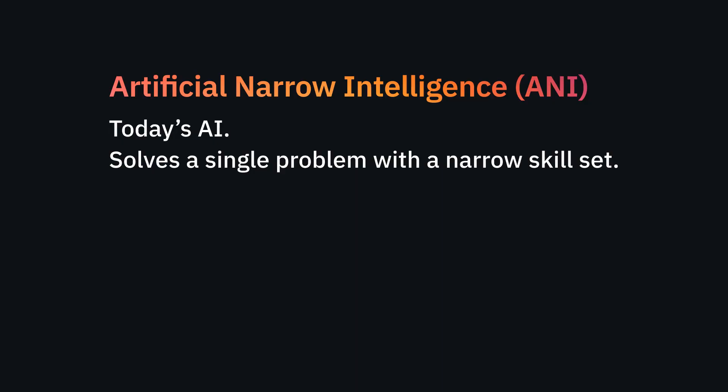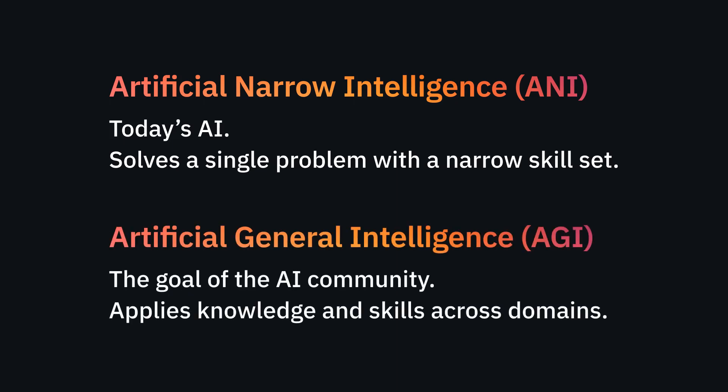Let's unpack a few subfields of artificial intelligence. The AI we encounter today is known as artificial narrow intelligence, also called weak AI. It solves a single problem by performing narrowly defined structured functions that result from human engineering — that includes web searches and content recommendations. By contrast, artificial general intelligence, or strong AI, is an aspirational level of AI where a computer's intelligence matches a human's and can be applied across many domains. We're not there yet, but it's a goal of the AI community.